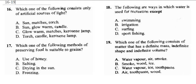Question 16 asks which option consists entirely of artificial sources of light. The sun is a natural source of light, so any option containing it is out. A glow worm is also a natural source of light, so that option is eliminated. Torch, candle, and kerosene lamp are all made by man and are artificial. So the correct answer is D.